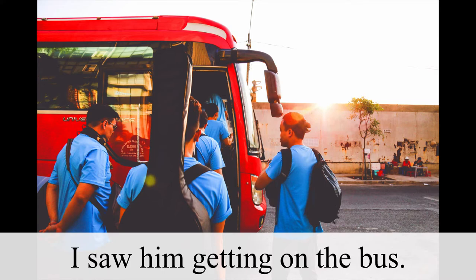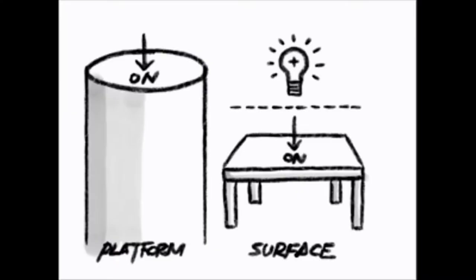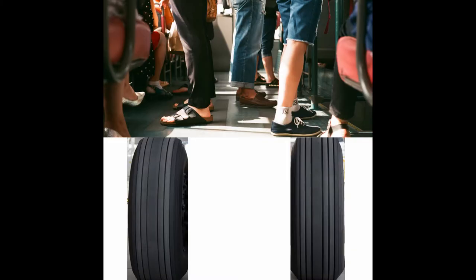Next, I saw him getting on the bus. In this context, to get on the bus means to board the bus. If we apply the logic of the preposition on, we can see that he's getting onto the platform. That's pretty easy.